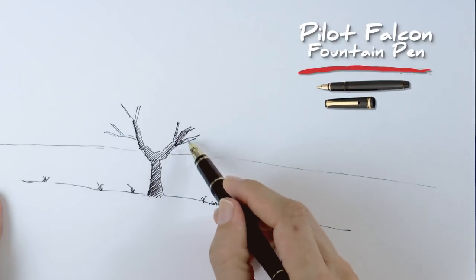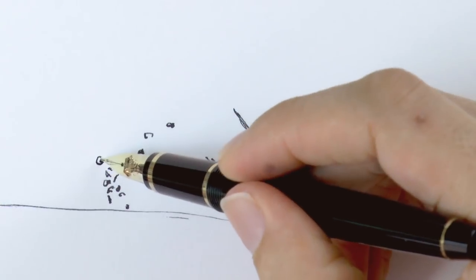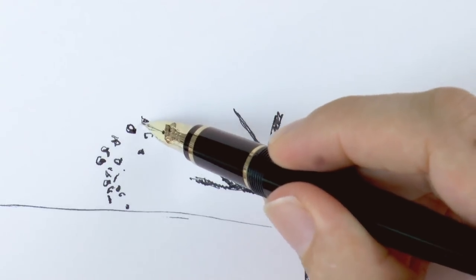We do this hatching and cross hatching to make it darker. Good! And let's do the foliage. We can do this very simply by scribbling.